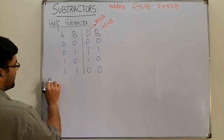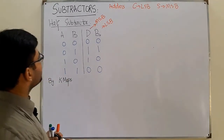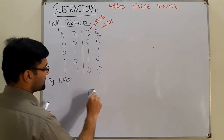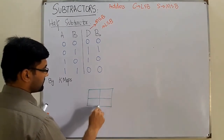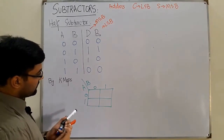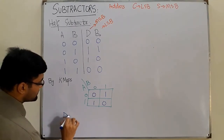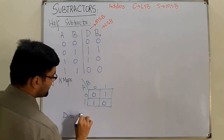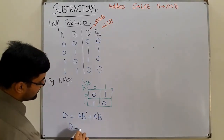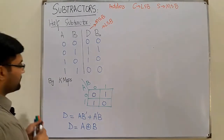Solving by K-maps: for the difference we have a two-variable, four-cell map. The values are 0, 1, 1, 0 — this is the checkerboard pattern. The result is A'B + AB', which is the XOR operation: difference D = A XOR B.